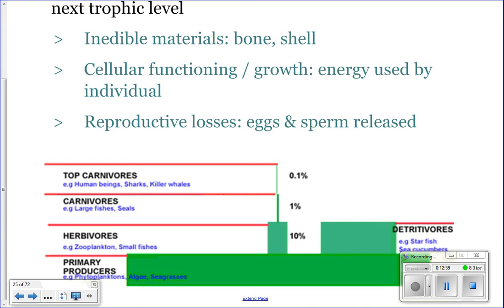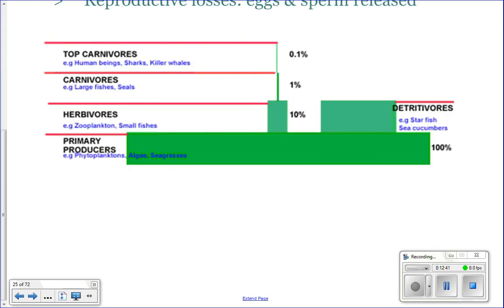So here's a picture that you actually have in your notes to help you see this. So if you have 100% of energy available in your primary producers, when the herbivores eat that, only 10% of that gets passed on. 90% is lost because of inedible materials, cellular functioning, and reproduction. When a carnivore eats that herbivore, only 1% gets passed on of the original energy. And then if another carnivore eats that carnivore, only 0.1% gets passed on.